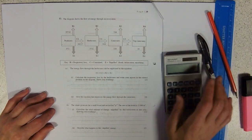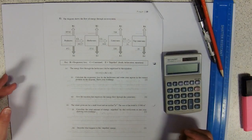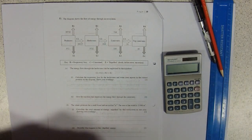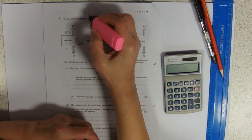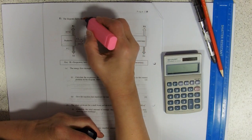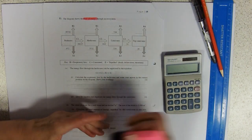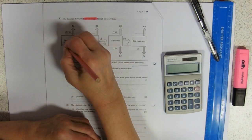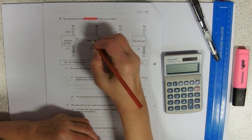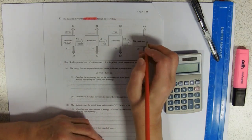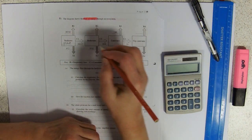So again, we've got a diagram showing the flow of energy through an ecosystem. We're going from producers—I'll just label that—plants, herbivores, carnivores, top carnivores. We've got the idea of stuff leaving, so we've got respiration, E expelled, death, defecation and excretion. How lovely.